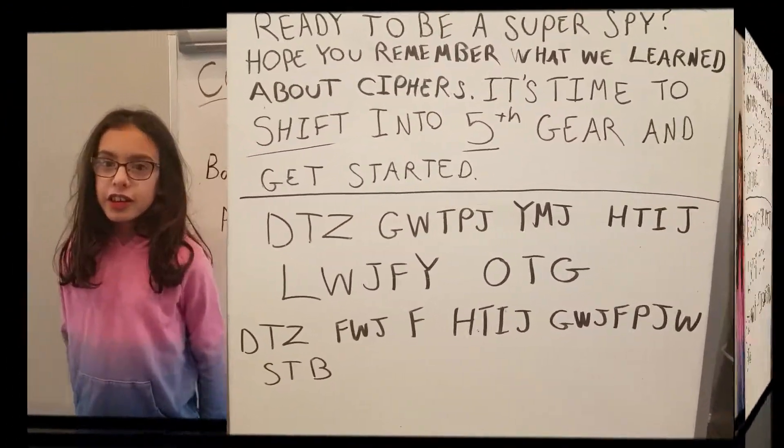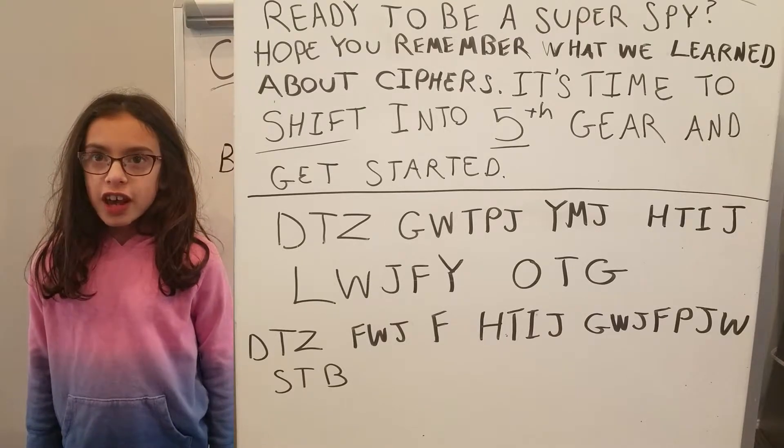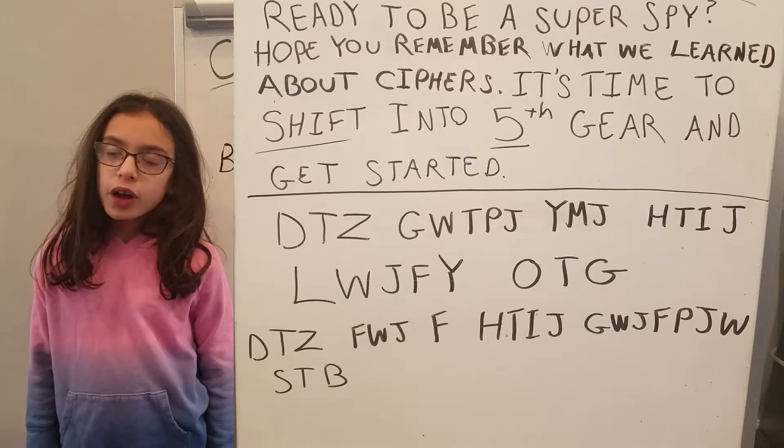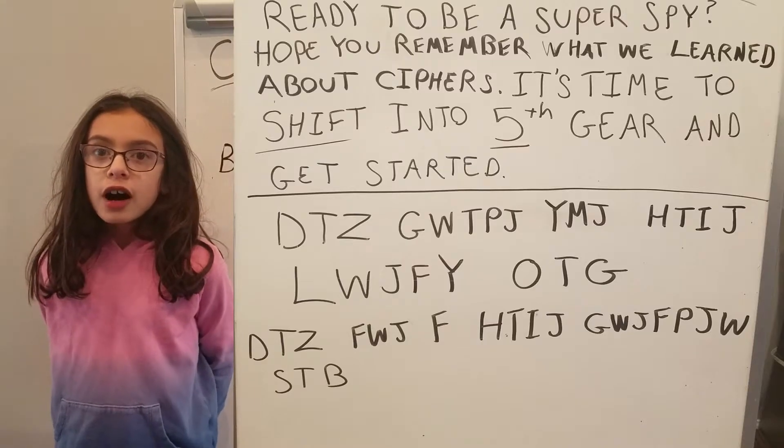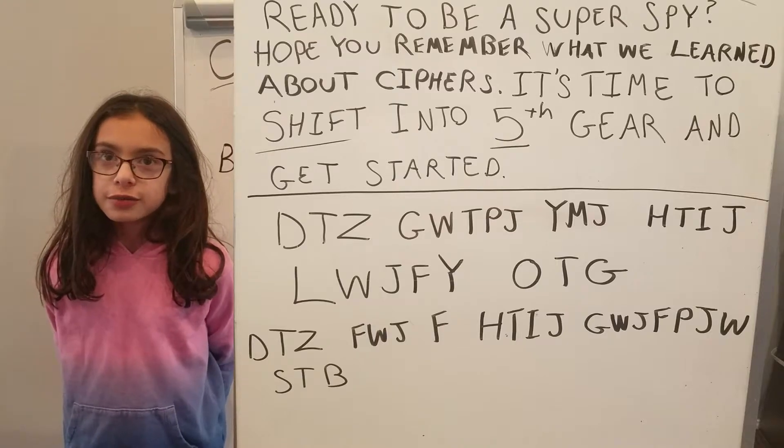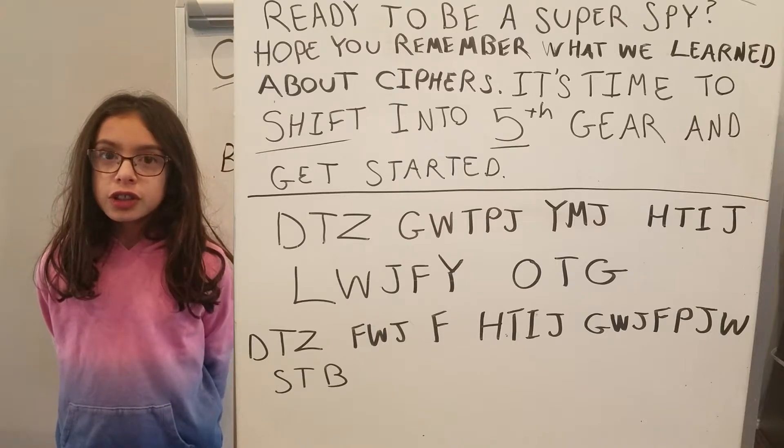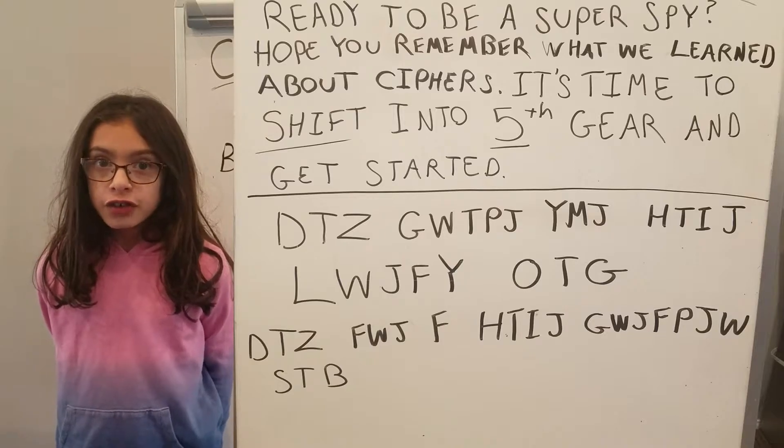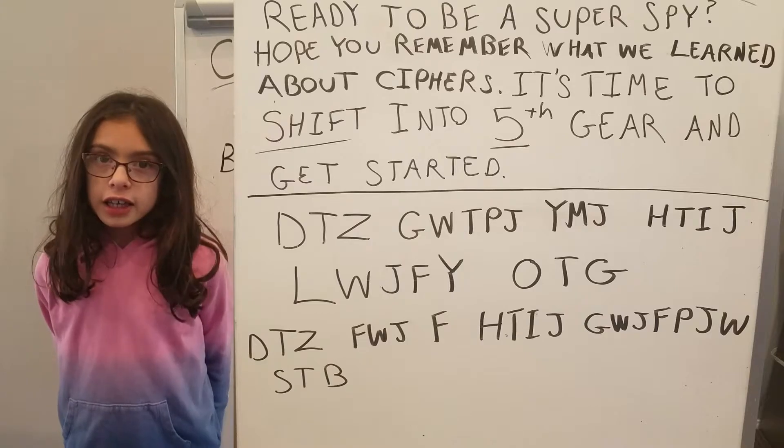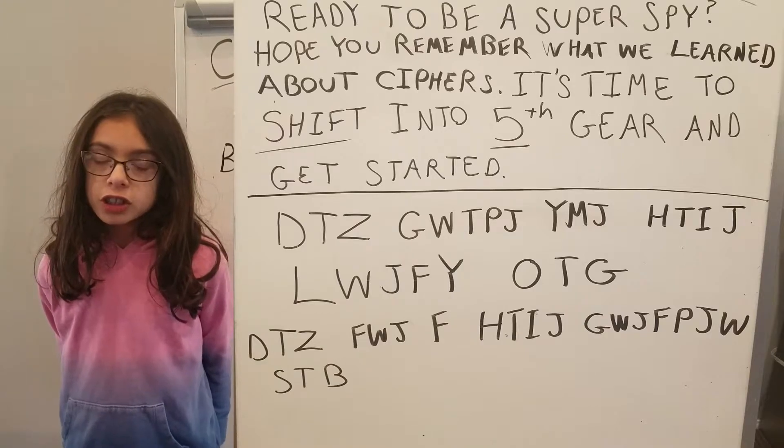In this secret message it said to shift into fifth gear and shift and 5 were underlined. If you remember, last lesson was on using shift ciphers. So this was the clue to use the shift cipher and shift every letter by five spaces. So a equals f and b equals g and so on.